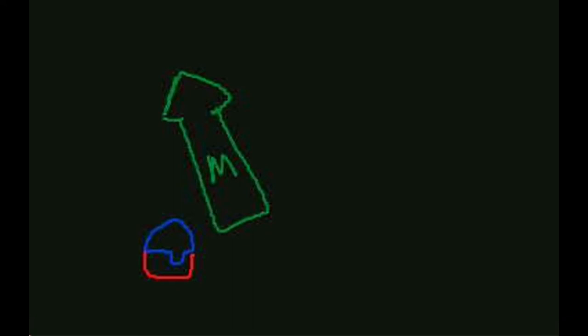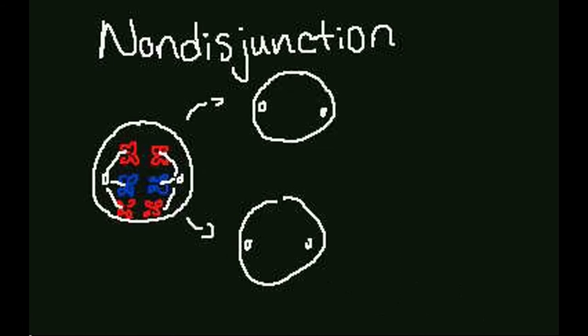In meiosis, mutations can occur also. Non-disjunction refers to pairs of homologous chromosomes that do not separate normally during meiosis.